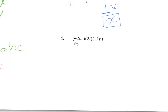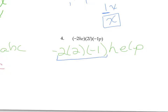This question is similar to number 3. There's just a lot of numbers and variables all being multiplied together, so we'll bring the numbers to the front: negative 2 times 2 times negative 1, from the coefficients. And then the variables h, e, l, p — which spells 'help'. Negative times positive times negative: two negatives multiply together to give us a positive product. And 2 times 2 times 1 gives us 4. So the answer is 4help.